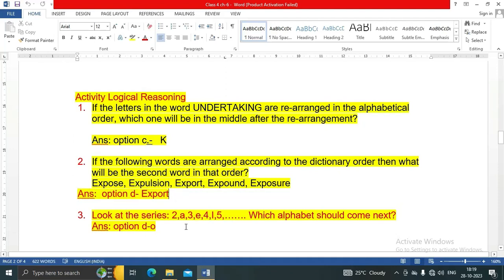Look at the series: 2, A, 3, E, 4, I, 5, and so on. Which alphabet should come next? The answer is option D, that is O. O alphabet should come next.